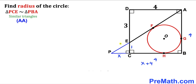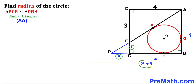We can see that triangles PCE and PBA are similar triangles according to the angle-angle similarity theorem, since both have right angles and they share a common angle. So we are going to have a proportion where the ratio of corresponding sides are equal.